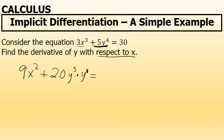On the other side of the equation, the derivative of 30 is 0. Now, the derivative of y with respect to x, which I'm representing as y prime, is what I'm being asked to find.